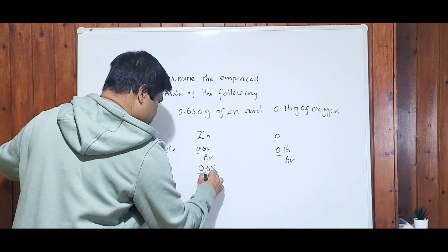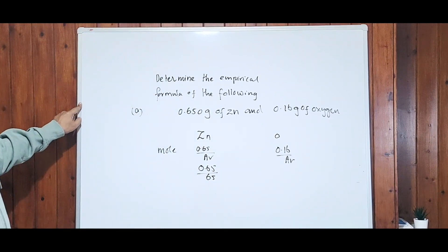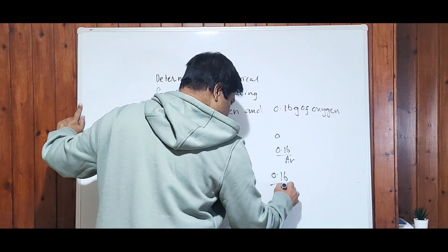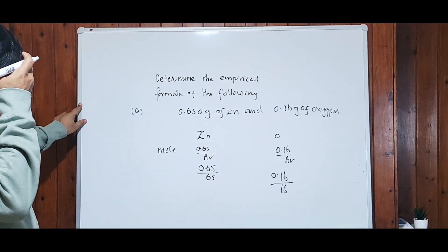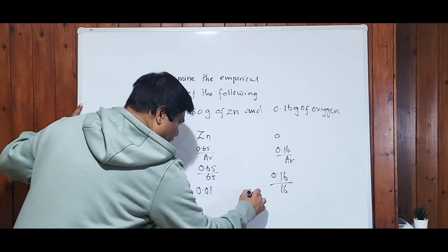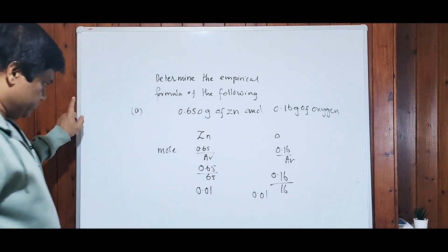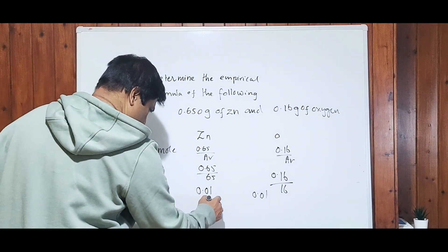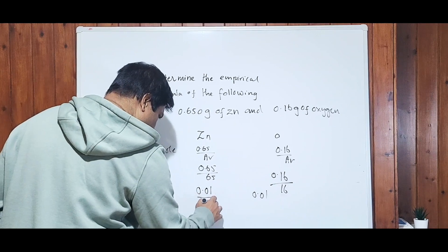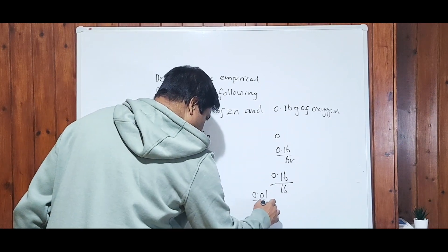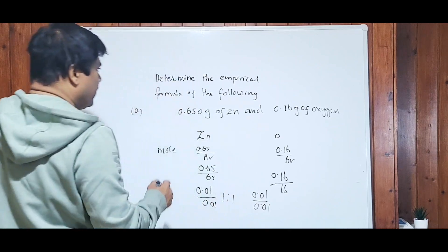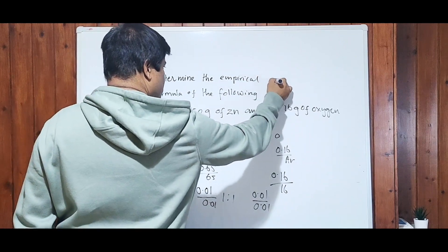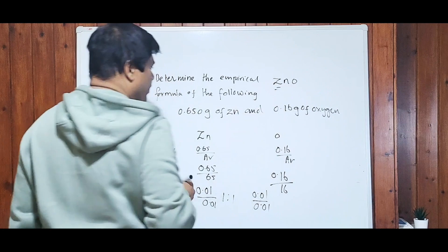The Ar of oxygen is 16, so 0.16 divided by 16. Now I want to find the simplest ratio, which is equal to 1:1 — divide both by 0.01. It gives a 1:1 ratio, which means the empirical formula of zinc oxide equals ZnO.